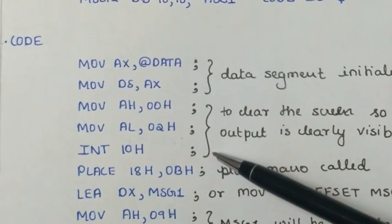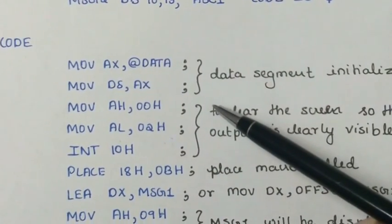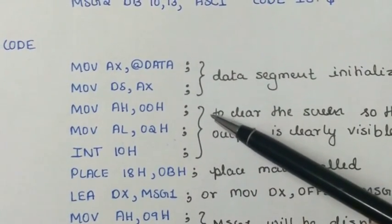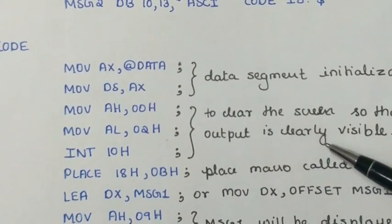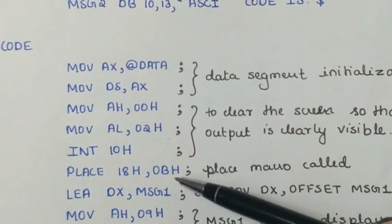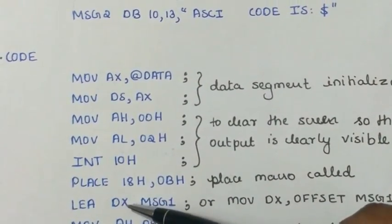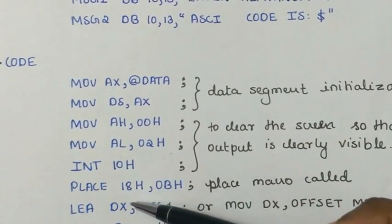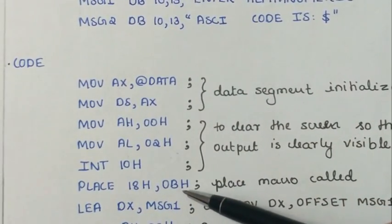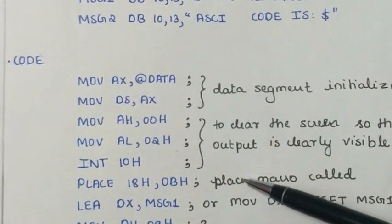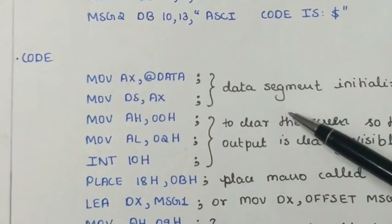These three lines are used to clear the screen. This is done because we can see the output clearly. Next, we call the place macro with the parameters 18h and 0bh. So, the cursor will be moved accordingly to that particular position.